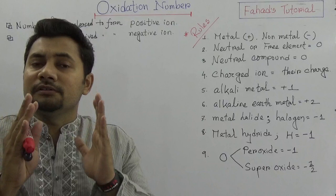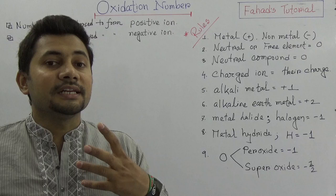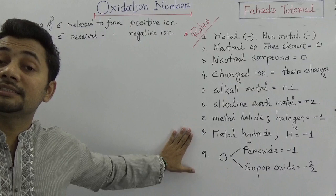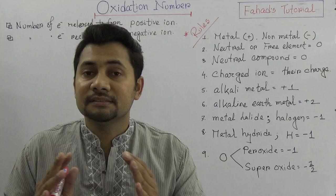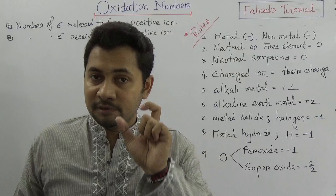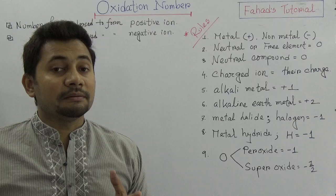To understand that completely, we need to follow some rules. It's not much tough but it's very easy to understand what are the rules and how to find the oxidation number of elements from compounds. There are nine rules that we must follow. Also, a very basic question is what is the difference between oxidation number and valency — I'll upload a separate class on that.